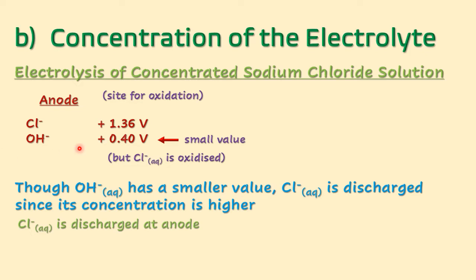This happens because the potential between chloride ions and hydroxide ions is small. When you subtract positive 0.40 volts from positive 1.36 volts, the difference comes to about 0.96 volts, and that's a small value. Therefore the potential is overcome and chloride ions are preferentially discharged.